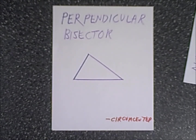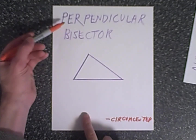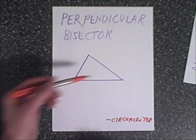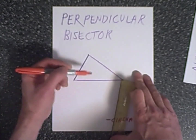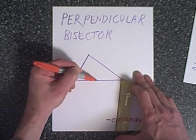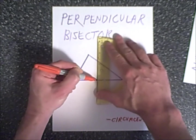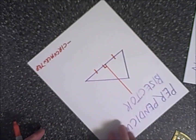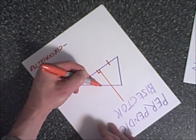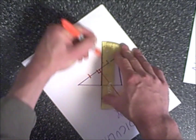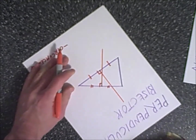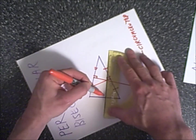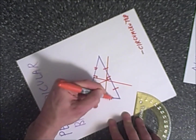Finally, we have the perpendicular bisector. It's a perpendicular segment that bisects each side. Instead of starting at the vertex, start at each side — specifically the midpoint — and draw a perpendicular line straight up. We do this for all three sides, each time starting at the midpoint and drawing a perpendicular line. These segments on each side are congruent.